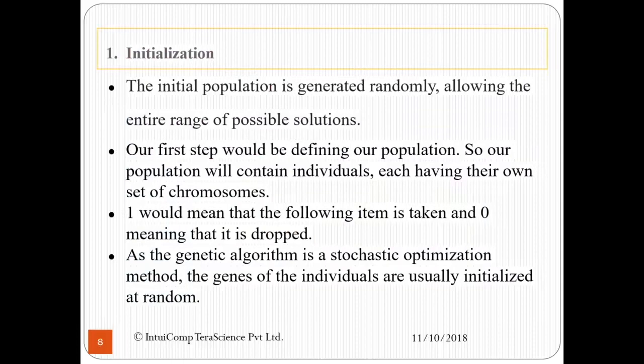Now let us look at these steps in detail. First, we come to initialization. The initial population is generated randomly most of the time, allowing the entire range of possible solutions to be selected. Our first step would be defining our population. So our population will contain individuals, each having their own set of chromosomes. One would mean that the following item is taken and zero meaning that the corresponding one is dropped. As the genetic algorithm is a stochastic, meaning random, optimization method, the genes of the individuals are usually initialized at random.